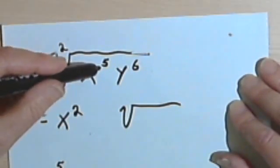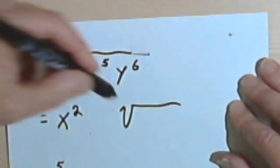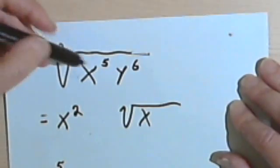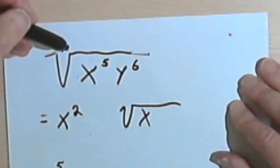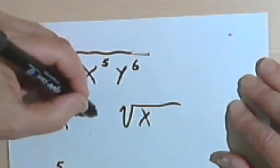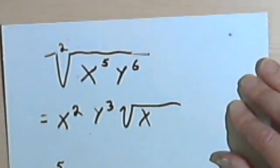And since there was a 1 remainder when I divided 2 into 5, I'm going to put an x under the radical sign. When I do y to the 6th, there won't be any remainder. 2 goes into 6 evenly. It goes in 3 times. So this is going to give me y to the 3rd.